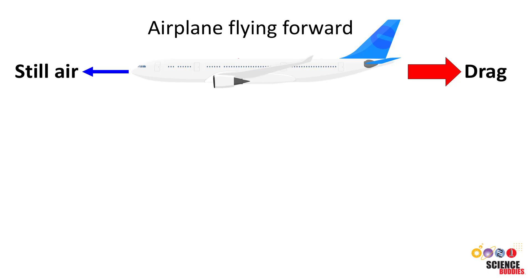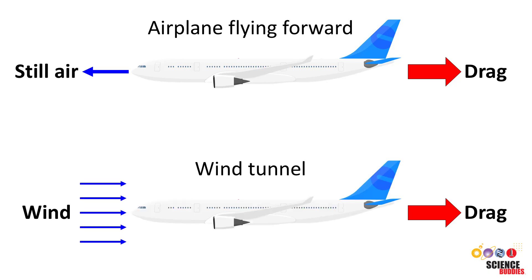It's important to remember that this motion is relative to the fluid, which can be a liquid or a gas. So the drag force points in the same direction for an airplane flying forward into still air, or for an airplane in a wind tunnel. In the wind tunnel, even though the airplane is not moving relative to the ground, it's still moving relative to the wind, so the drag force points in the same direction.